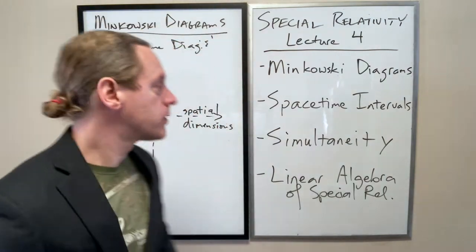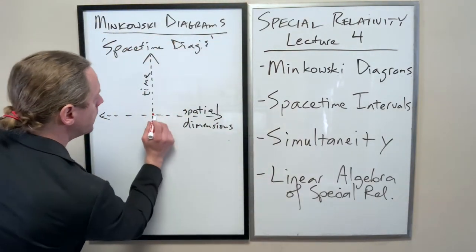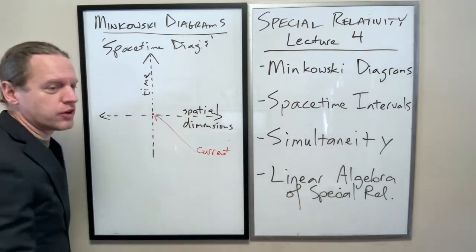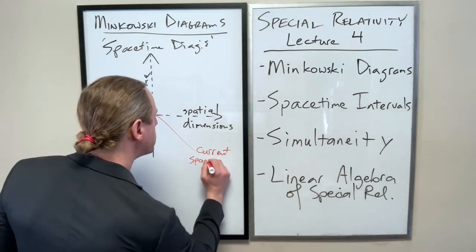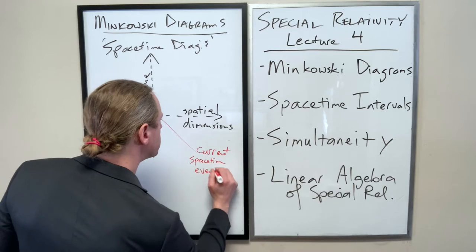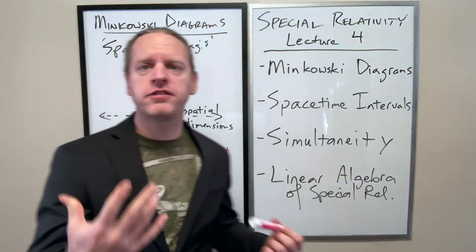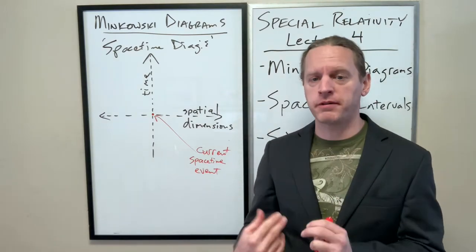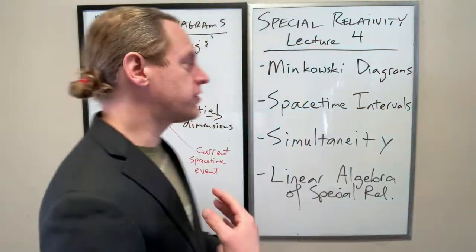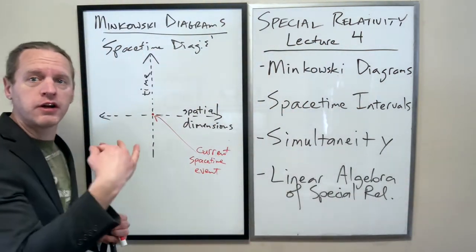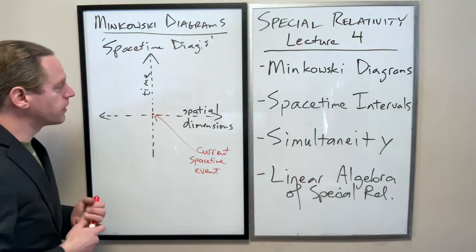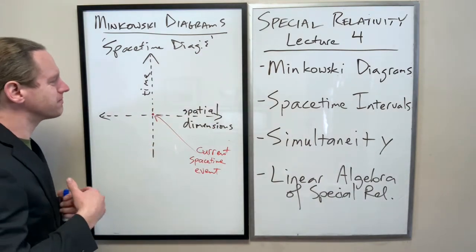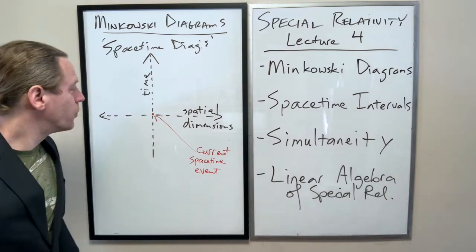A couple of important points. Right here at the origin, this is the current spacetime event. Remember, the word event simply means it's an ordered pair — X, Y, Z, T. It's the same thing as a coordinate, but we use a different name when talking about four-dimensional spacetime. So this is our current position — the current time is where our spatial origin lies.